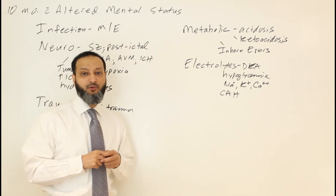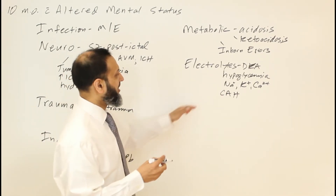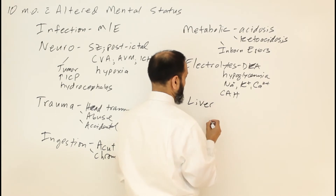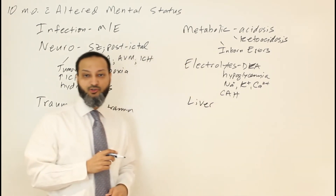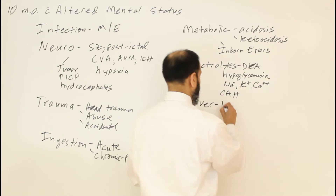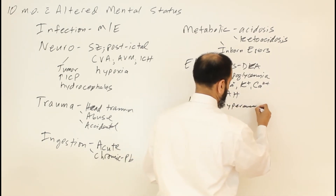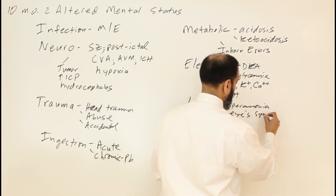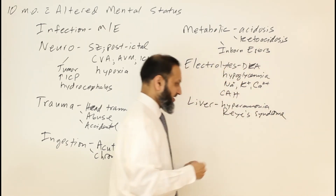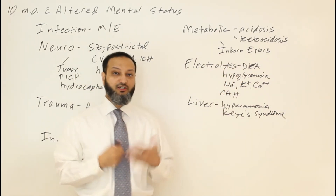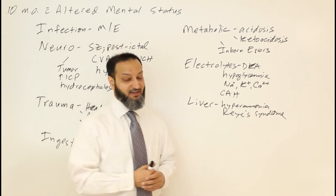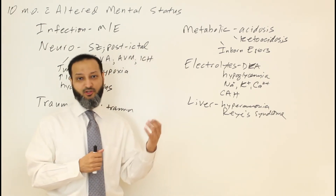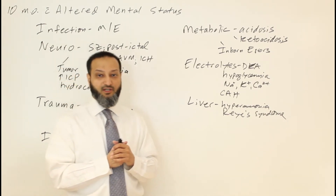Other considerations include liver-related causes. You can have liver failure or hyperammonemia from a urea cycle defect. Different causes of increased ammonia level include Reye syndrome — where taking aspirin during a varicella or influenza infection can cause encephalopathy related to liver dysfunction. So liver failure and hyperammonemia are additional things to think about.